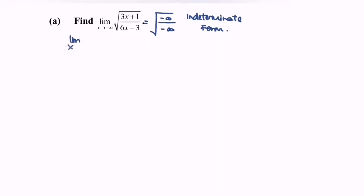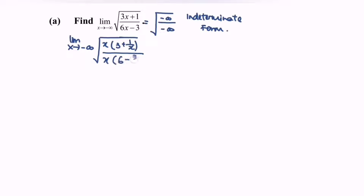Taking the limit as x approaches negative infinity, if we factor out x we have: square root of (3 + 1/x) over x multiplied by (6 - 3/x). Simplifying, we get: the limit of square root of (3 + 1/x) over (6 - 3/x).